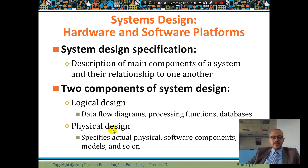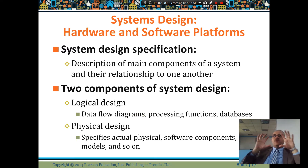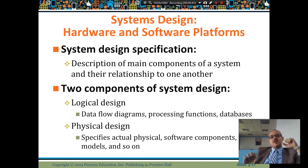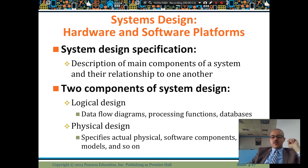Two components of system design: logic design and physical design. Logic design involves data flow diagrams — it shows the flow of data. For example, if people log in, they have two options. If you want to buy something online, these are the steps: you choose, you add to the cart, you check out. So you need a logical design showing the procedures of the system, maybe a flowchart.